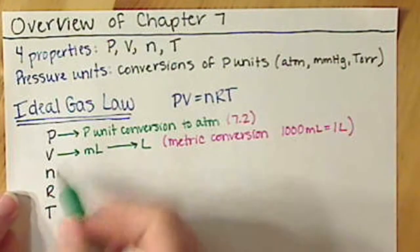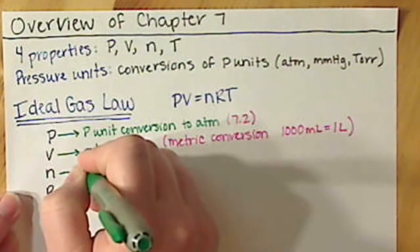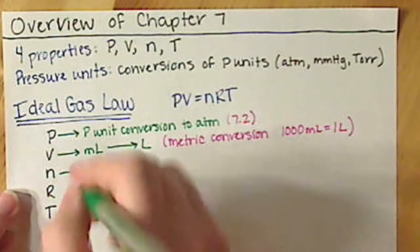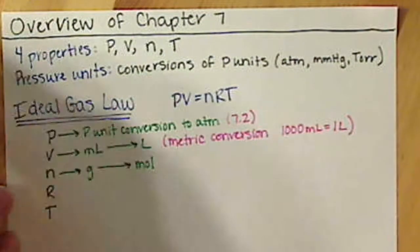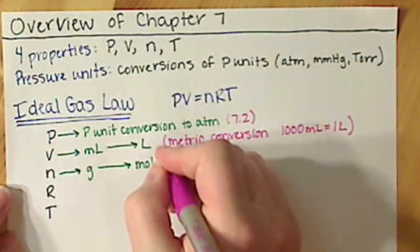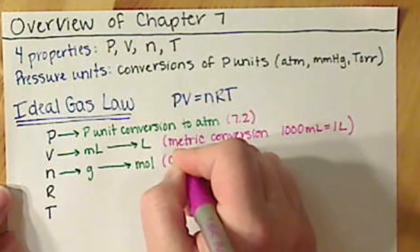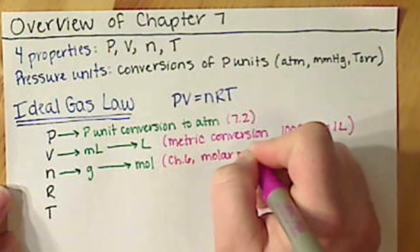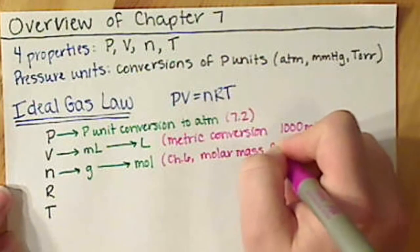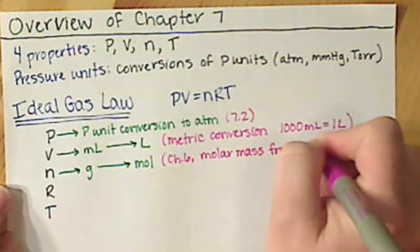n, your amount of gas, usually you're going to be given grams and you're going to want to convert to moles. That's from Chapter 6 and that's your molar mass, and you get that from the periodic table.